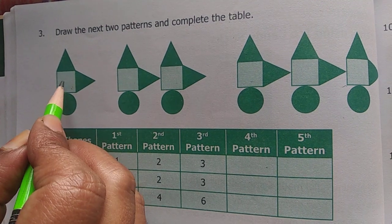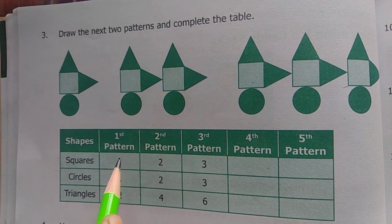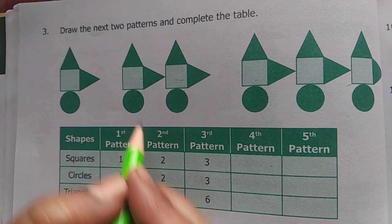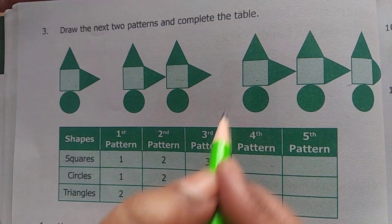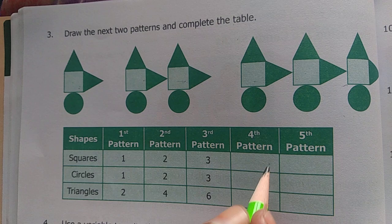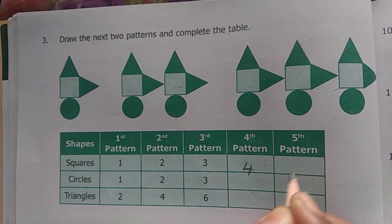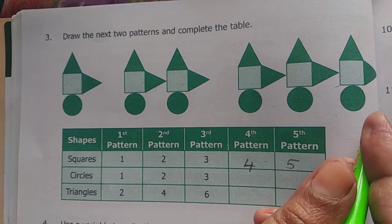Squares, first is 1. Second, 1, 2. Third, 1, 2, 3. Fourth, which is 4. Fifth, which is 5. You can draw up.